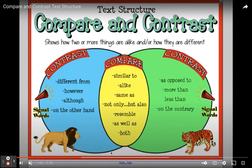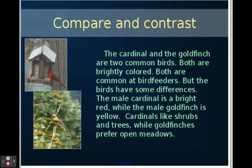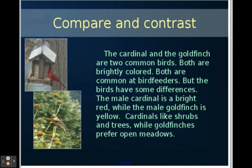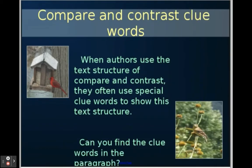This is what we're going to look for when we're doing compare and contrast. Take a look at this story: 'The cardinal and the goldfinch are two common birds. Both are brightly colored. Both are common at bird feeders, but the birds have some differences. The male cardinal is a bright red, while the male goldfinch is yellow. Cardinals like shrubs and trees, while goldfinches prefer open meadows.' When authors use the compare and contrast text structure, they often use special clue words to show this text structure.